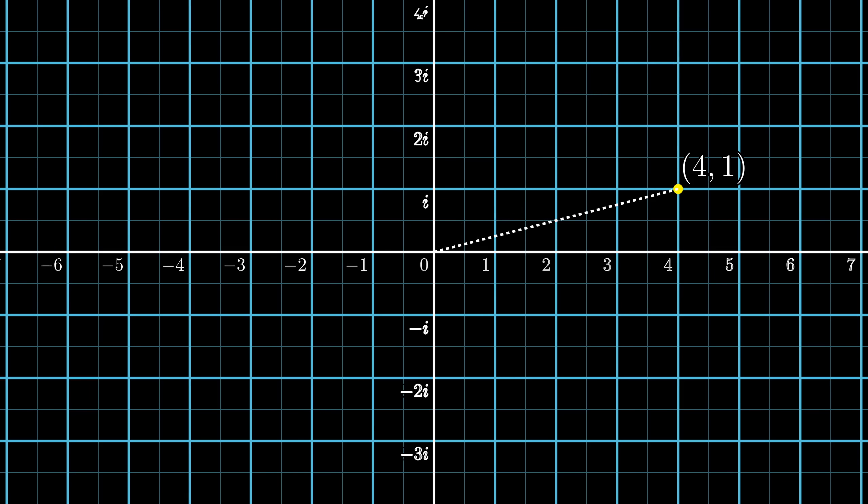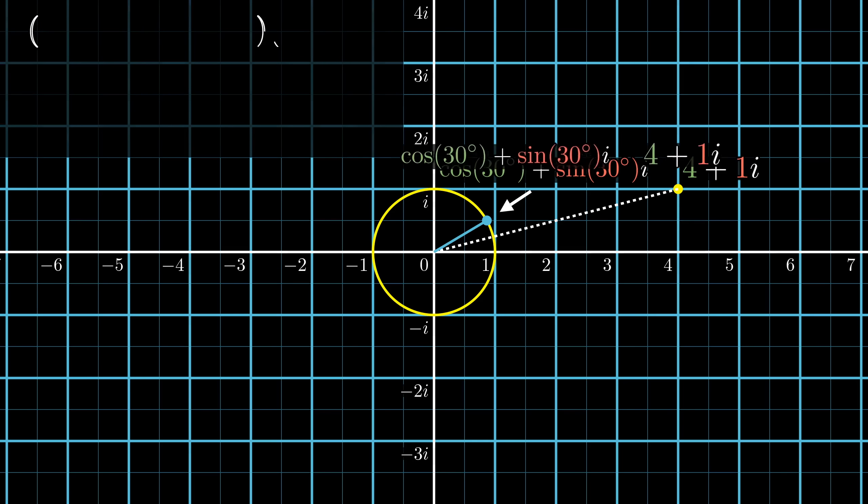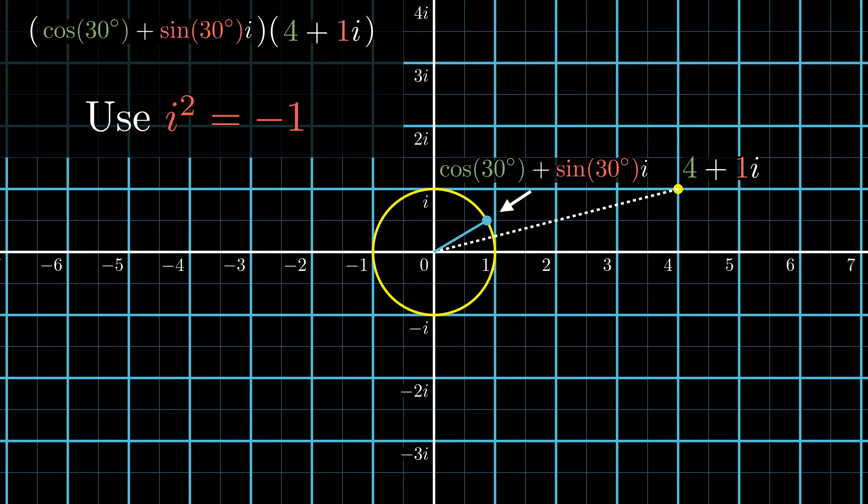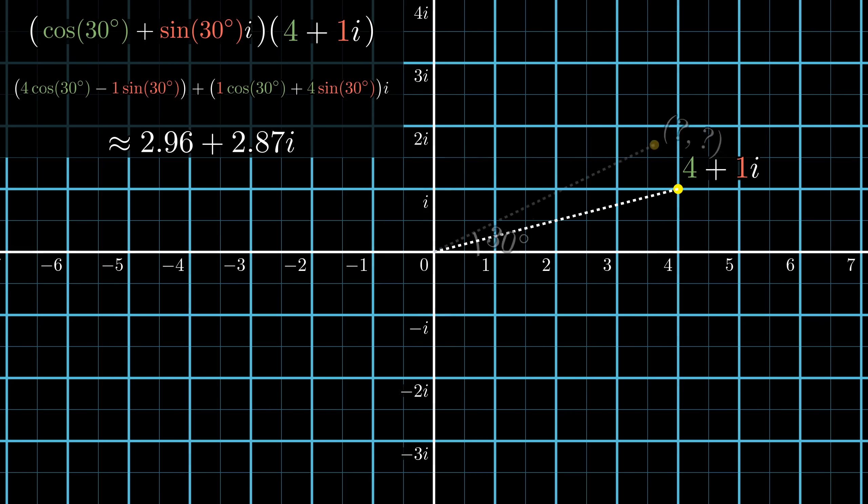Complex numbers give sort of a snazzy way to do this. You take the complex number that's 30 degrees off the horizontal with magnitude 1, cosine 30 degrees plus sine of 30 degrees times i, and then you just multiply this by your point, represented as a complex number. The only rule you need to know to carry out this computation is that i squared equals negative 1. And then, in what might feel like a bit of black magic to those first learning it, carrying out this product from that one simple rule gives the coordinates of a new point, the point rotated 30 degrees from the original.